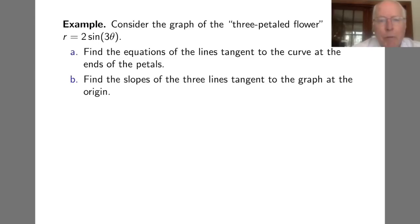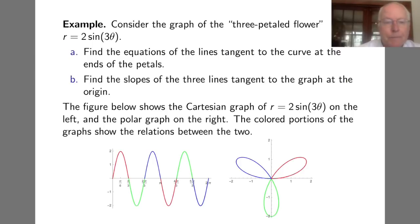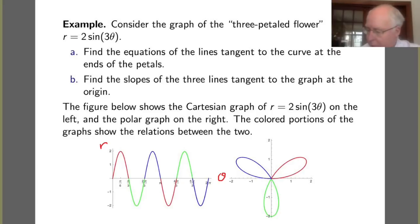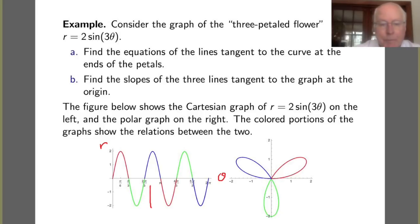So let's look at an example. We're going to consider the graph of the so-called three-petaled flower given by R equals 2 sine of 3 theta. We're going to find equations for the lines tangent to the curve at the ends of the three petals, and find the slopes of the three lines tangent to the graph at the origin. Let's construct the graph first. As we did in the last video, we're going to take a look first at the Cartesian graph, with theta on the horizontal axis and R on the vertical axis.